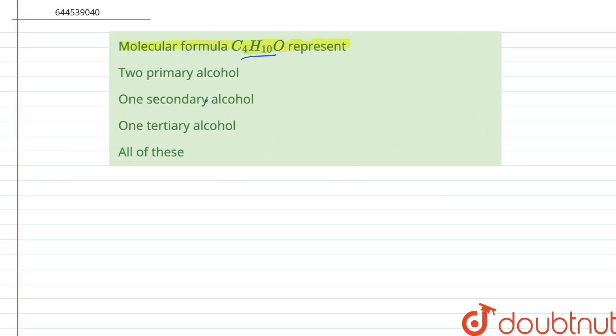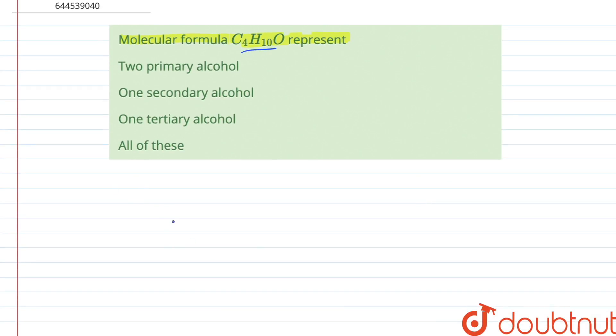C4H10O will have four carbons and ten hydrogen with one oxygen. So it would be CH3 here, CH3 here, CH here, and OH here.